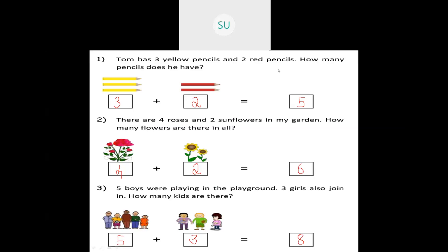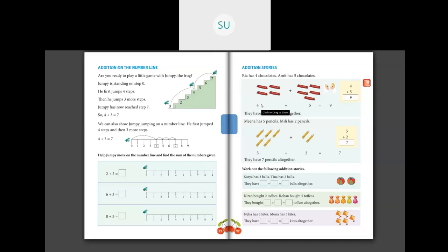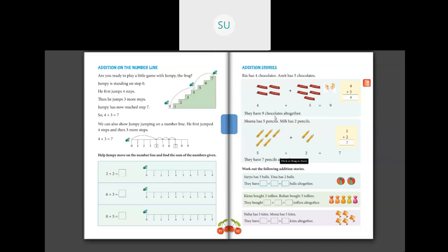So this is what addition stories are — they give you stories about addition and you add to write the answers. Let's see the stories on page number 92 in your textbooks. Rhea has 4 chocolates and Amit has 5 chocolates. Find the total. Number of chocolates Rhea has is 4, Amit has 5. So 4 plus 5 equals 9 — counting: 1, 2, 3, 4, 5, 6, 7, 8, 9. Rhea and Amit together have 9 chocolates.